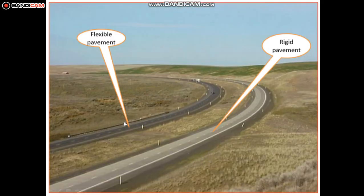By seeing the color, we can identify which is flexible and which is rigid pavement. Flexible pavement has a black surface with poor visibility during night time, while rigid pavement has good visibility during night time also.